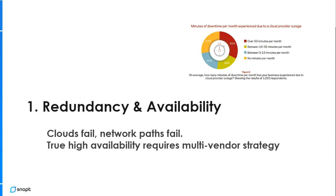Clouds fail and network paths fail. A cloud availability zone could go offline, and an entire cloud provider could, in theory, go offline. Out of 1,200 respondents, 27% said they have no downtime per month from cloud providers — meaning the vast majority experience some amount of downtime each month. When you look at large organizations, it's not just availability zones going down, but also system outages — losses of virtual machines, instances, or services. Clouds have a 1% to 2% failure rate per year.